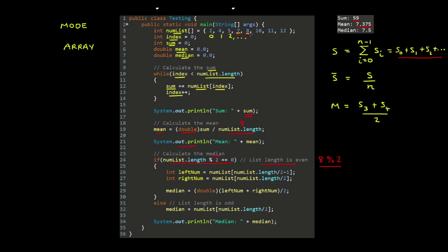So that will be the number in the list at index 8 divided by 2 minus 1. So that will be the number at index 3 in this case. So 0, 1, 2, 3. And then we have another number that's at index 8 on 2, which is 4.